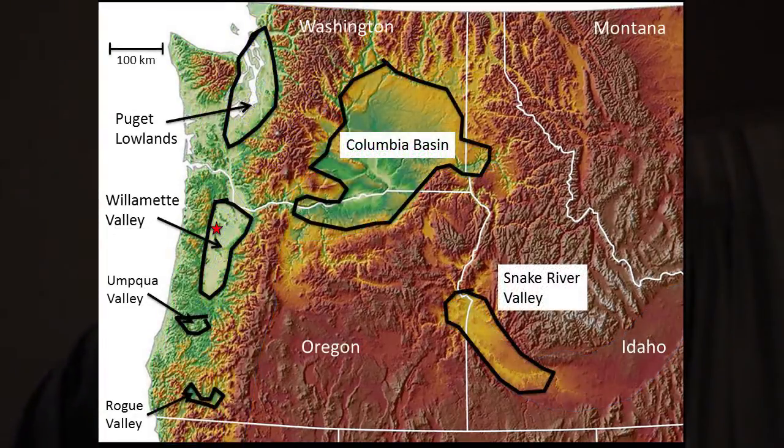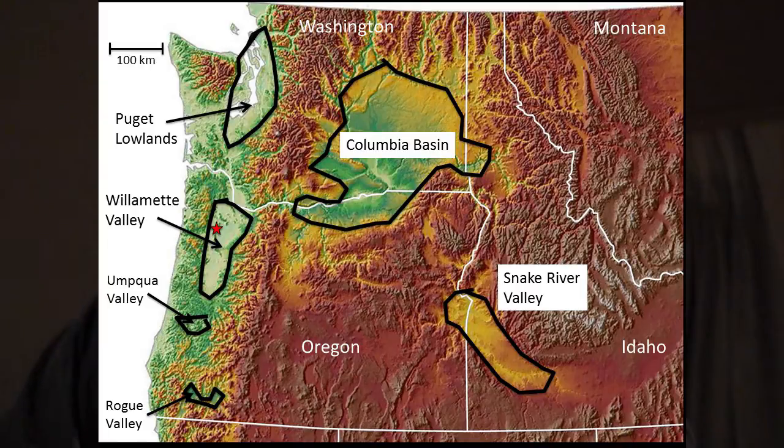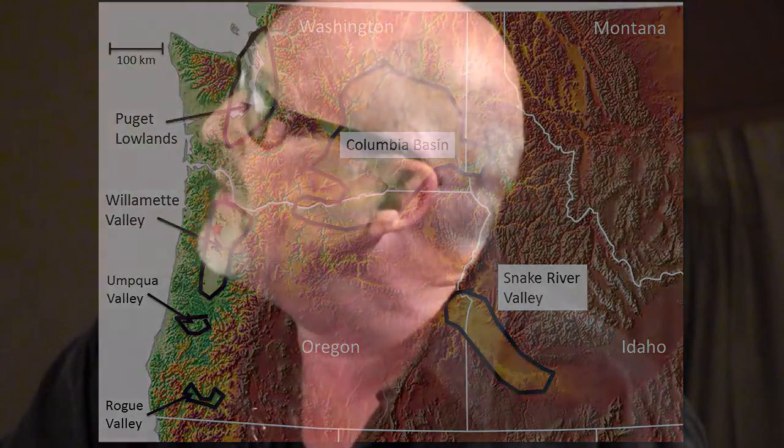These are our grape-growing regions — not the AVAs, just the valleys where viticulture mostly takes place. You can see it's mostly in topographically low regions: the forearc basin of the Willamette Valley, the back-arc basin of the Columbia Basin, and to some degree the Snake River Valley. I'll give a brief introduction to each, spending more time on the Columbia Basin and Willamette Valley since about 90–95% of the grapes come from there.